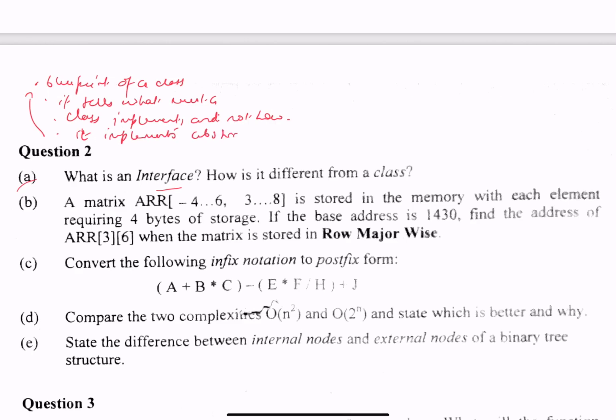There are three points: one is blueprint, then it tells what a class must implement and not how, and then it implements abstraction. That is, it is a blueprint of a class and tells what has to be implemented, meaning it is implementing abstraction.